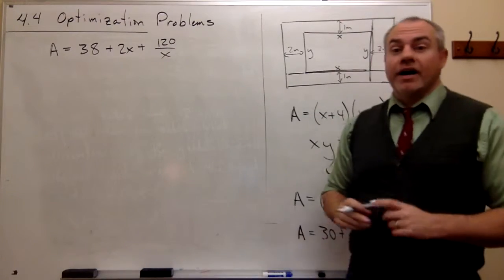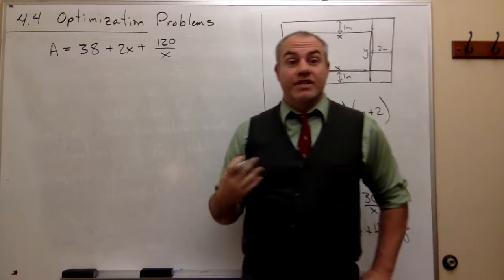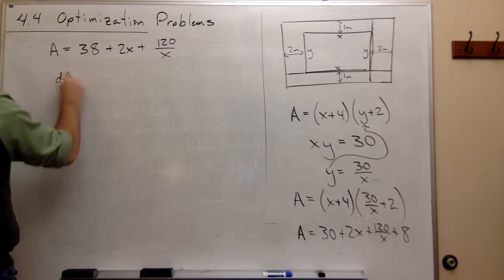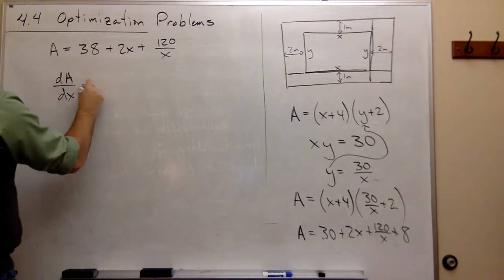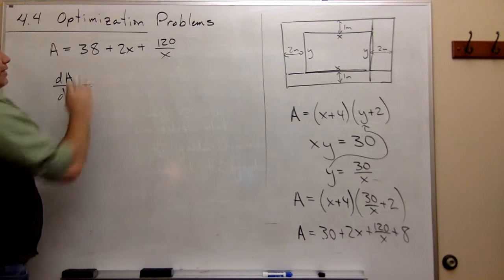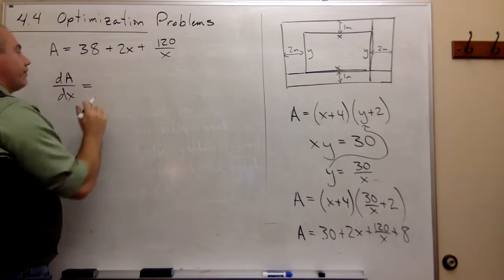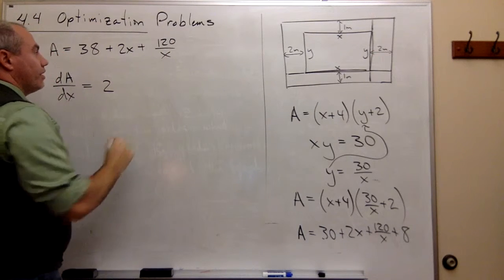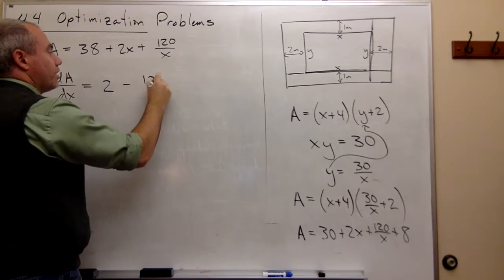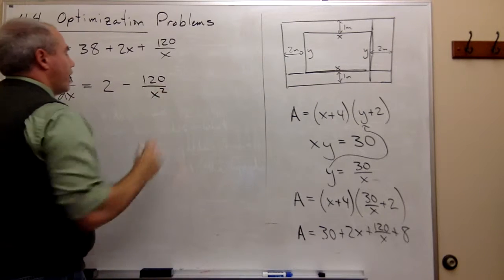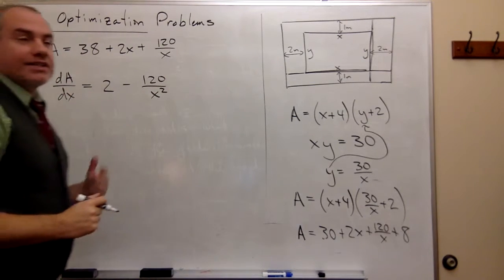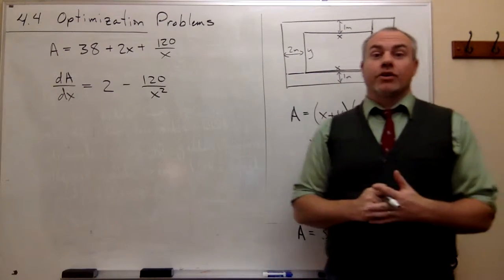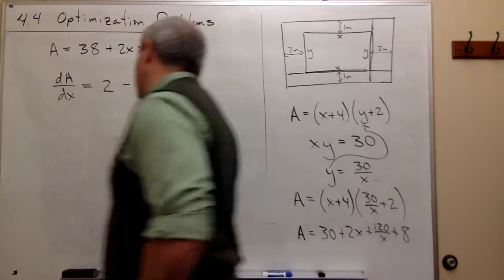So now I am ready to take the derivative of this guy. So let's do that. I've got dA/dx, which is equal to—well, the derivative of 38 is 0, the derivative of 2x is 2, and the derivative of 120 over x is negative 120 over x squared. So now that I've got a derivative, I can set it equal to 0, solve for x, and see what my critical point is, or points.